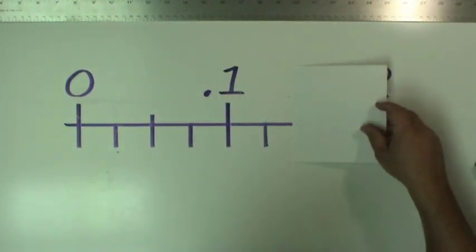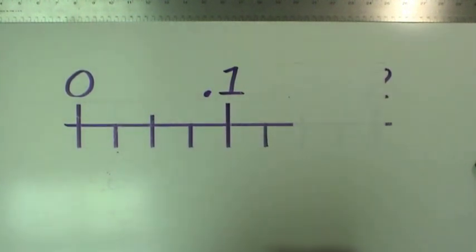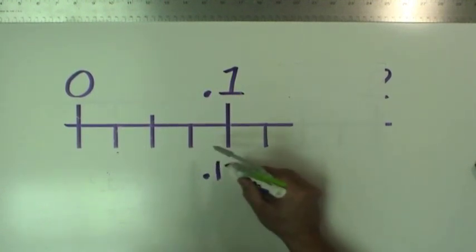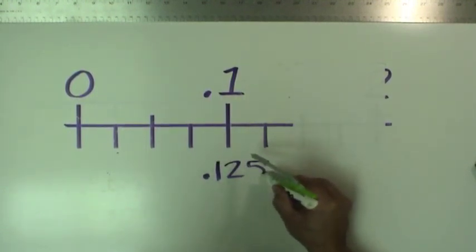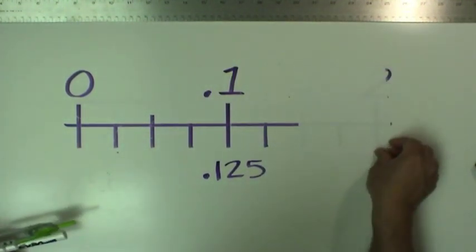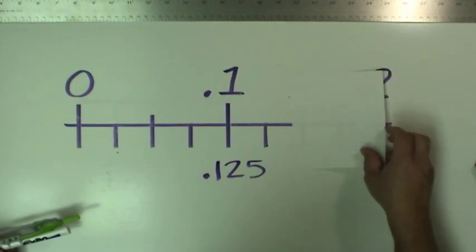Our reading is something greater than 0.125, because we have that much showing. The question is, how much more? In other words, we know that we're between these two marks, but how far in between are we?